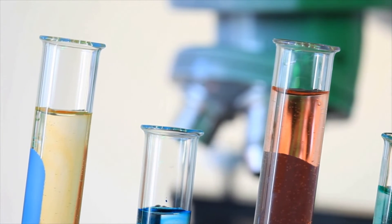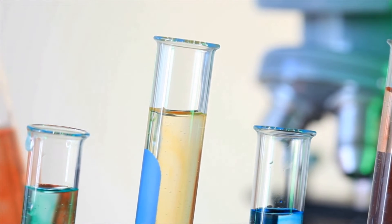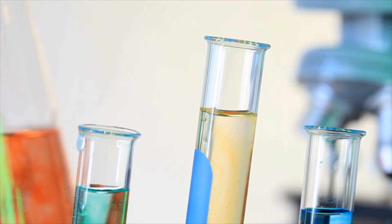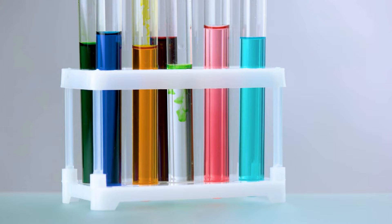Test tubes can be round-bottomed, flat-bottomed, or conical-bottomed, but round-bottomed test tubes are the most common. Test tubes are typically used to hold, mix, or heat small quantities of chemicals, especially for quantitative experiments.